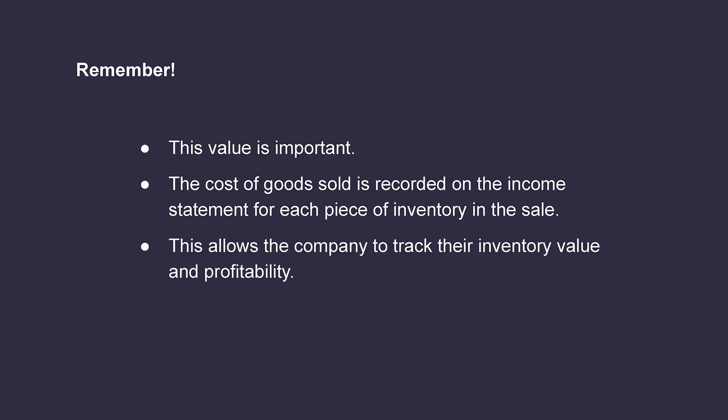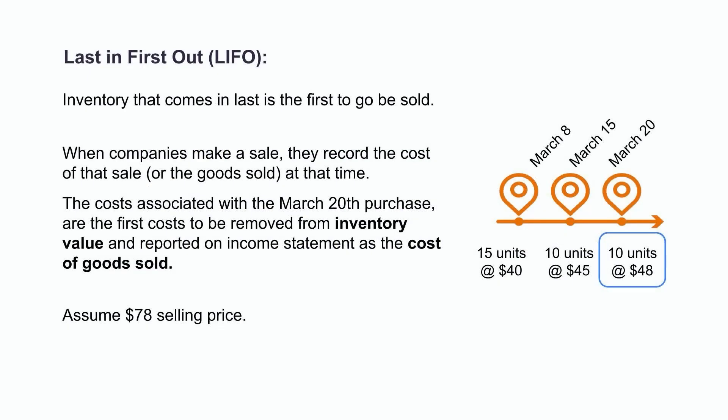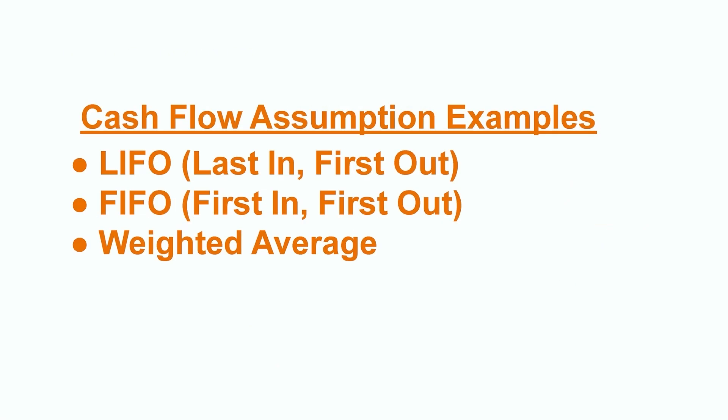This $48 value is important because this is the amount recorded to the income statement as the cost of goods sold for each piece of inventory on that sale. This allows for an efficient way to track the company's inventory value and profitability. We can now easily calculate the profit on the sale of each piece of inventory. Assume we sold each product for $78. The $78 sales price less the $48 cost of goods sold would equal a $30 profit on each piece of inventory. There are various cost flow assumptions that companies can choose to use, such as LIFO, FIFO, or weighted average, and depending on the choice, there could be an impact to the company's bottom line profitability.